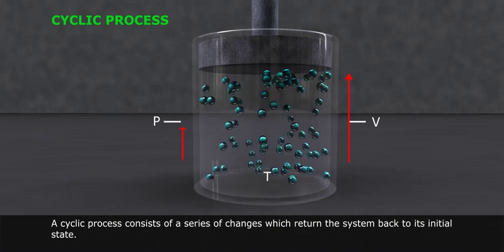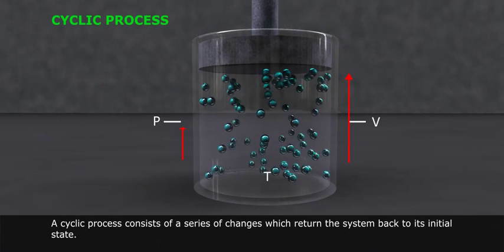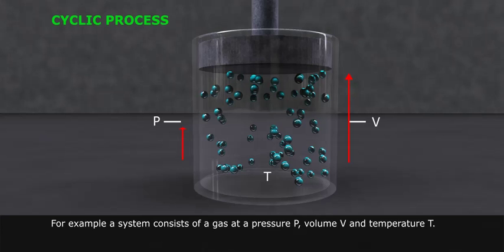A cyclic process consists of a series of changes which return the system back to its initial state. For example, a system consists of a gas at pressure P, volume V, and temperature T.